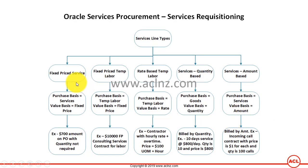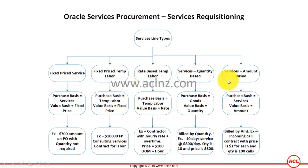As you can see, there are different kinds of line types such as Fixed Price Services, Fixed Price Temp Labour, Rate Based Temp Labour, Services Quantity Base, and Services Amount Base. There is a subtle difference between each of these, and most of the difference you can see right away by the name itself.